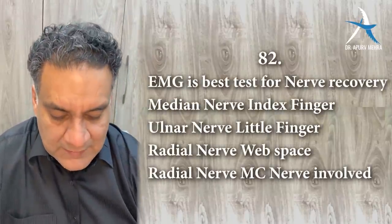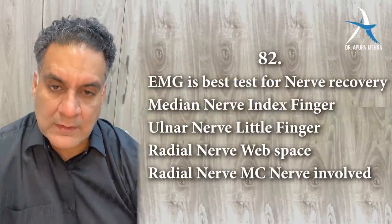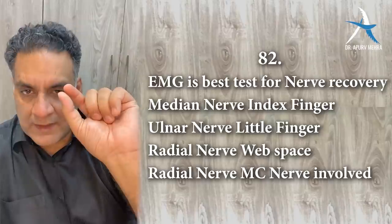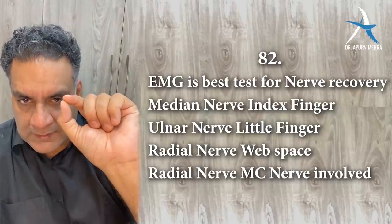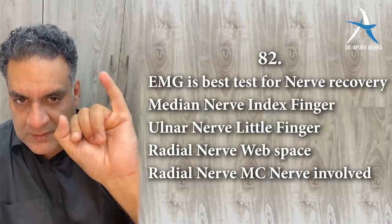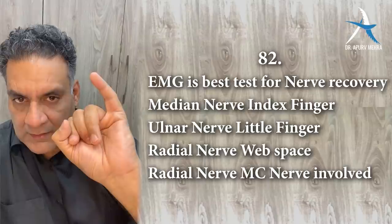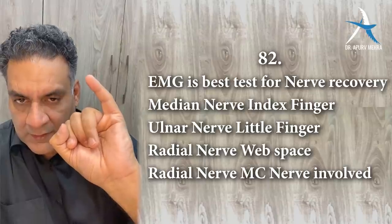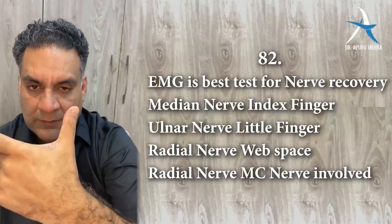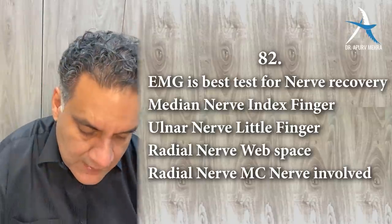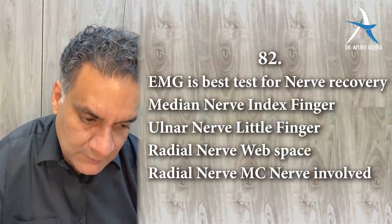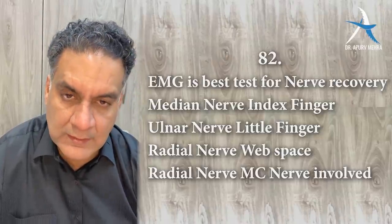The median nerve supplies the tip of the index finger for sensation. The ulnar nerve supplies the tip of the little finger. The dorsum of the first web space is supplied by the radial nerve. Radial nerve is the most commonly damaged nerve in the human body.